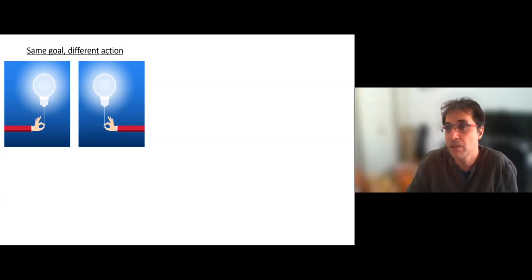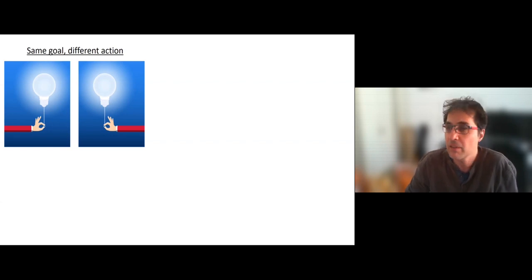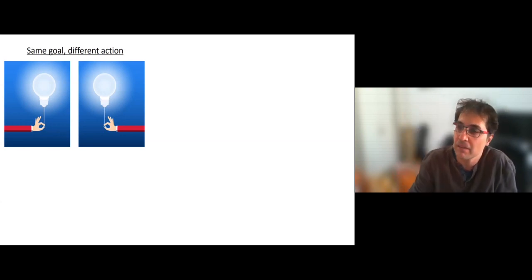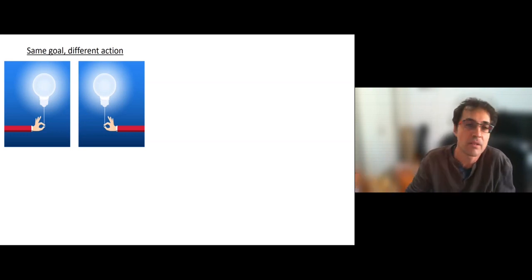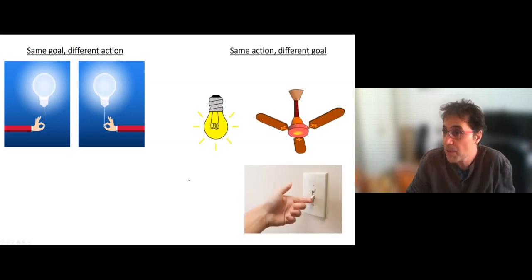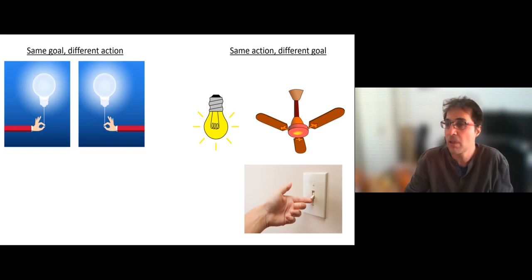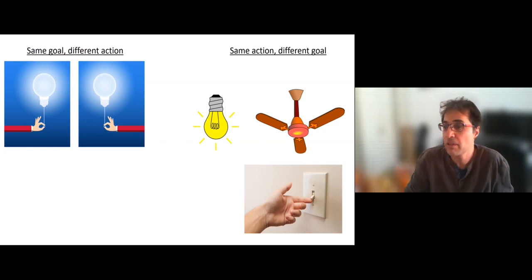For example, if I want to turn on the slides, I can use either my right or my left hand. Or if I take an example from COVID days, if in the past I used to open the door using the palm of my hand, today if I don't want to get infected, I will use my elbow instead. So there are different motor schemes that I can use to attain the same goal. The flip side is also correct: I can use a particular motor scheme to achieve various goals.